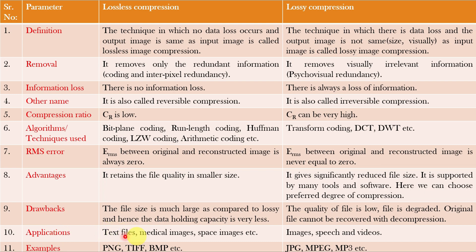The applications of lossless compression include text files, medical images, and space images — all the places where we do not want any loss of information. Whereas lossy compression is used for example images, speech, and videos. The file format examples for lossless compression include PNG, TIFF, and BMP. Whereas the examples of lossy compression include JPEG, MPEG, and MP3.